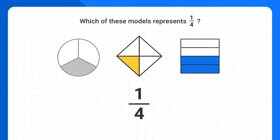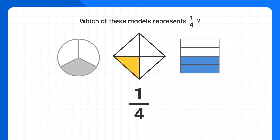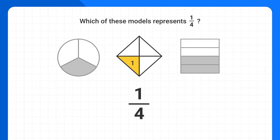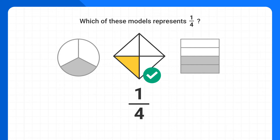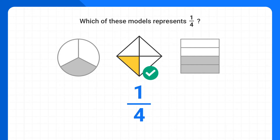The next thing we can look at is the numerator. This tells us the number of pieces we have, which means the number of shaded pieces. We need to find a model that has 1 shaded piece. This model has 1 shaded piece, so this is correct. The other model has 2 pieces shaded, so it can't be this one. This model represents the fraction 1 fourth.